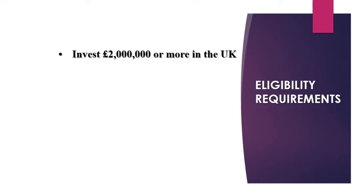The first requirement of the investor visa is excess of two million pounds or more. If you have two million pounds, you will be eligible to apply for Indefinite Leave to Remain after five years. If you have ten million pounds, you will be eligible after two years. If you have five million pounds, you will be eligible after three years. And after one year of Indefinite Leave to Remain, you will be eligible to apply for British citizenship.